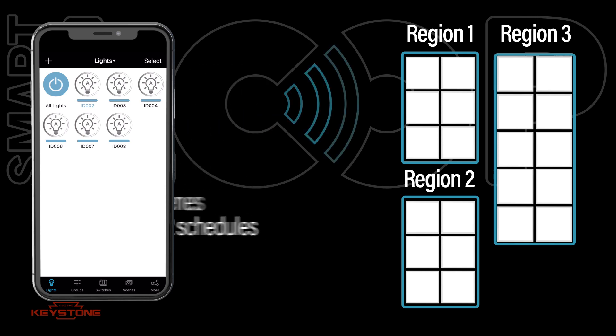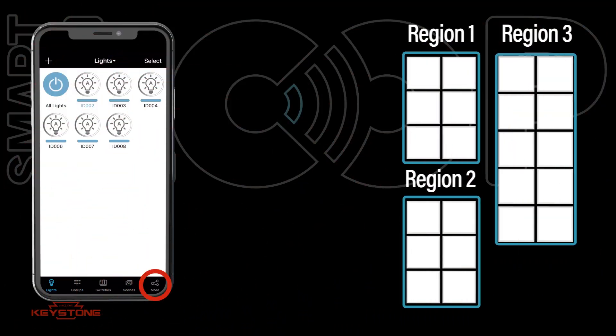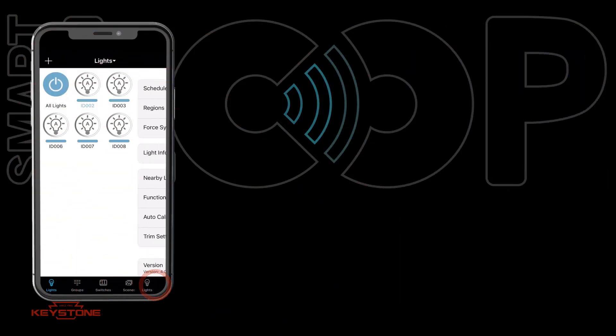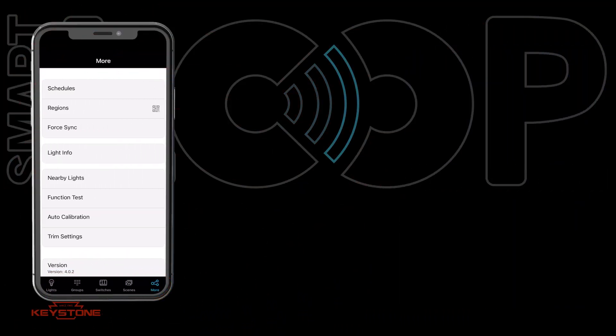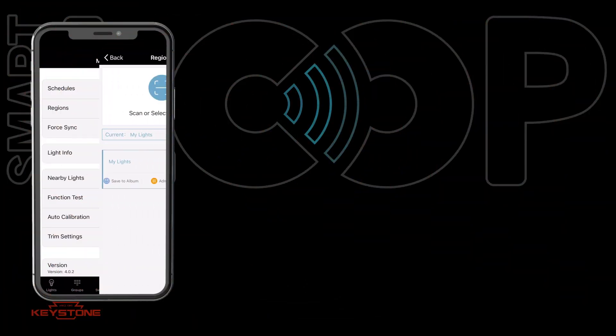The regions currently managed in your app can be accessed via the Regions page. Press the More button in the bottom pane, and then press Regions.